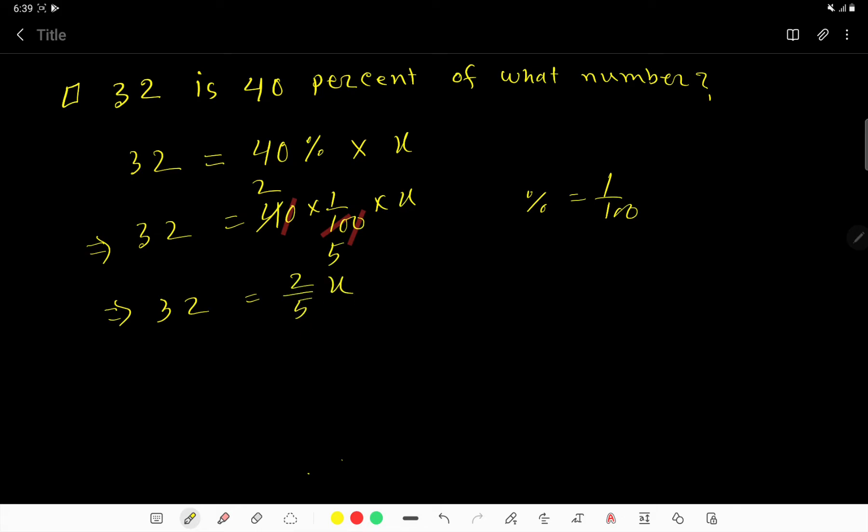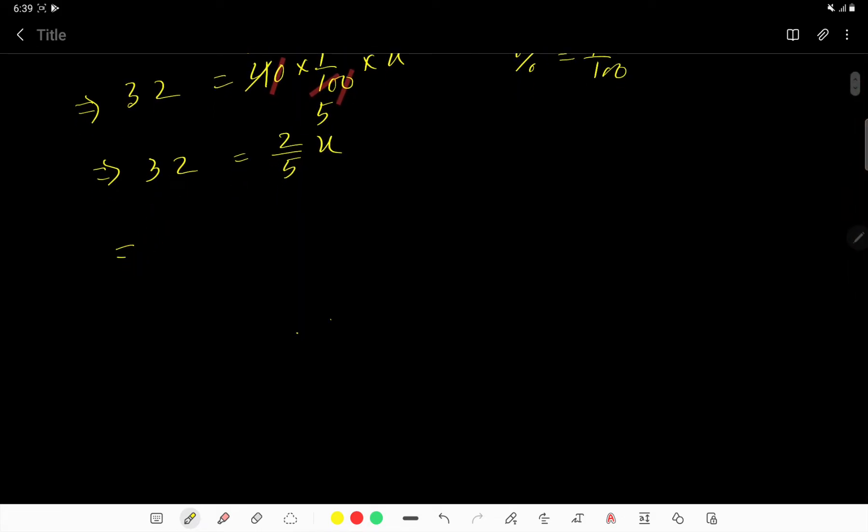32 equals 2 over 5 times x. If I multiply both sides by 5, the 5s cancel each other. We are getting 32 times 5 equals 2x.